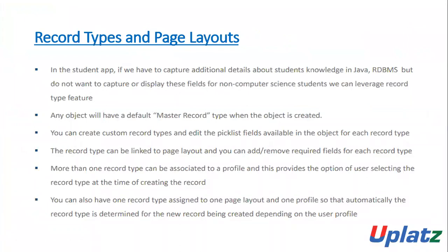We'll discuss some points about record types and then jump into our developer edition org to see this in action. In the student app, if we have to capture additional details about students' knowledge in Java or RDBMS but do not want to capture or display these fields for non-computer science students, we can leverage the record type feature. Any object will have a default master record type when the object is created — even if we don't create any record type, we still have a master record type available.